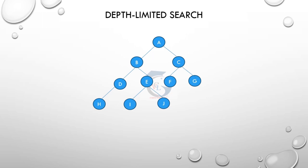This is depth limited search. Depth limited search is a variation of depth first search where we set a limit to overcome the problem of infinite paths in DFS. We search to the depth limit, find the deepest point, backtrack, and try to reach the goal state. Sometimes we find the solution, sometimes not - that is the drawback. The advantage is that we avoid infinity paths by setting a limit to search, and we save memory and time.